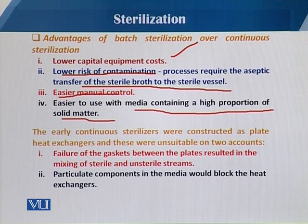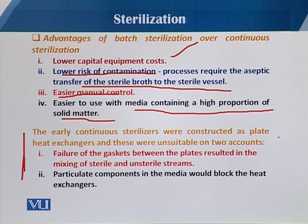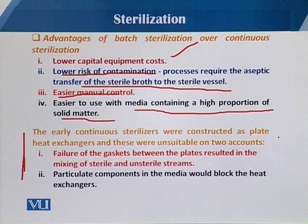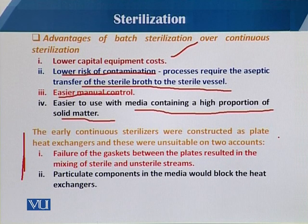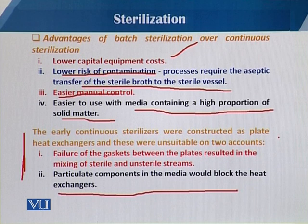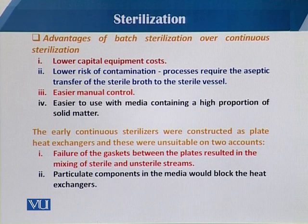Early continuous sterilizers were constructed as plate heat exchangers, but these were unsuitable for two reasons. First, failure of the gaskets between the plates resulted in mixing of sterile and unsterile streams. Second, particulate components in the medium would block the heat exchangers, because the passages are very small, and viscous media caused blockage leading to greater losses.